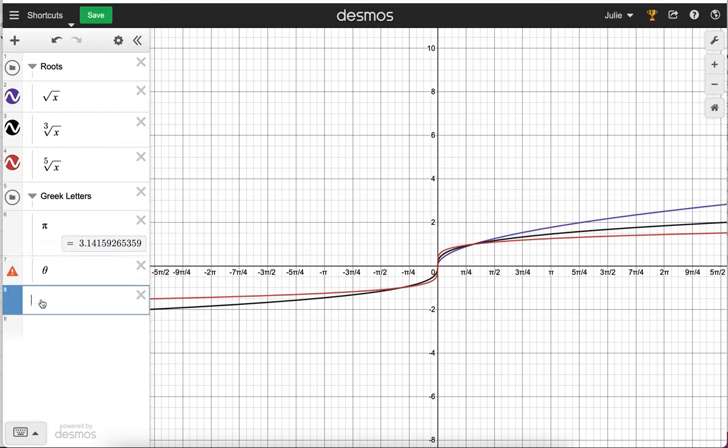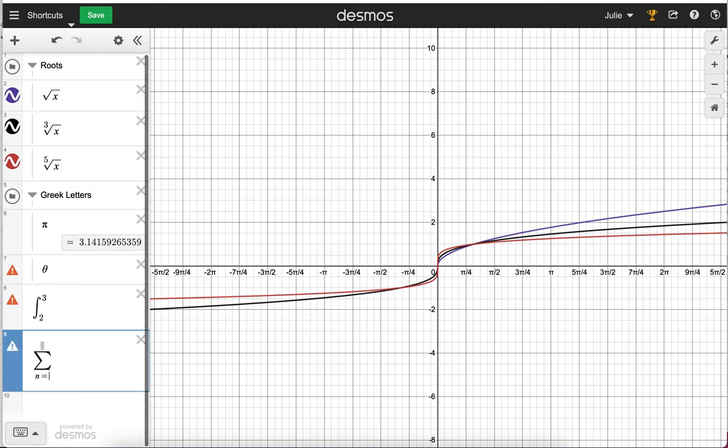Moving on to calculus and other things, if you type I-N-T, you get an integral symbol, and then you can do limits of integration quickly. S-U-M gives you summation notation.